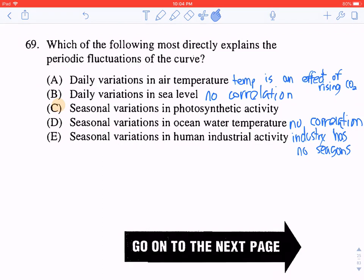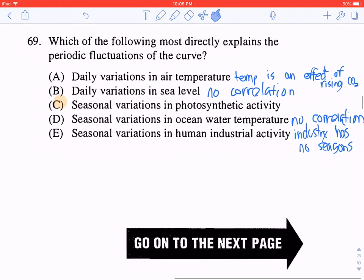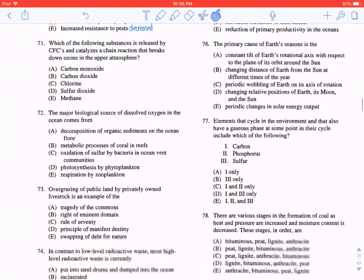And it wouldn't be E, because seasonal variations in human industrial activity is false, since industry has no seasons. Industries operate year-long. The correct answer would be C, seasonal variations in photosynthetic activity.